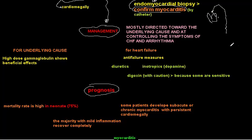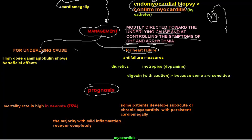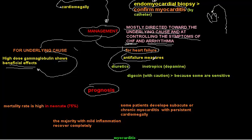Management of myocarditis is directed toward two things: the symptoms of congestive heart failure and arrhythmias, and management of the underlying cause. High-dose intravenous immune gamma globulin shows beneficial effect in myocarditis. For heart failure, give diuretics and inotropes such as dopamine. Digoxin can sometimes be given with caution.